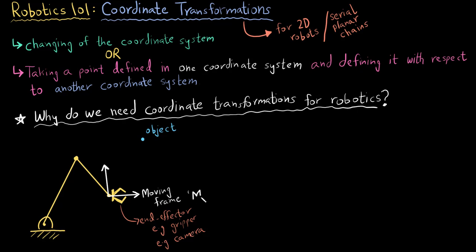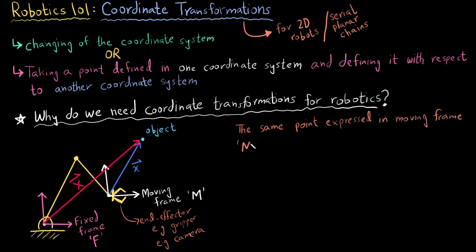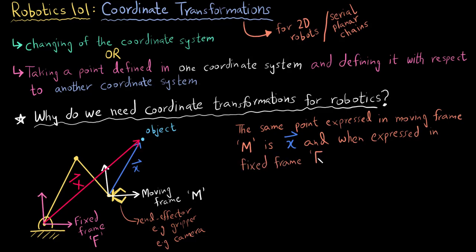I make a moving frame M at the end effector, and I know the position of the object with respect to the end effector — I mark this as small x. I then make another coordinate system at the base of the robot, which I call the fixed frame F. Often I know small x, which is the position of the object with respect to the moving frame, and I need to find big X, which is the position of the same object with respect to the fixed frame. This comes in handy when I have a moving robot with a camera at the end effector — I know where the object is with respect to the camera, and then I can express the same object with respect to the base of the robot.